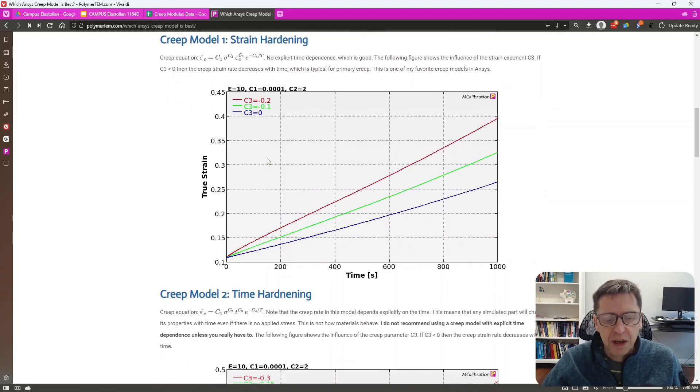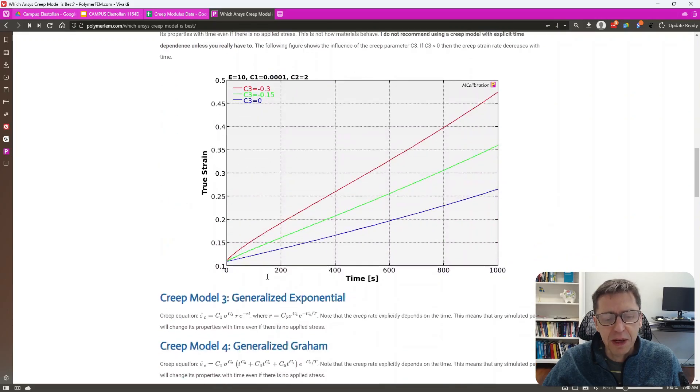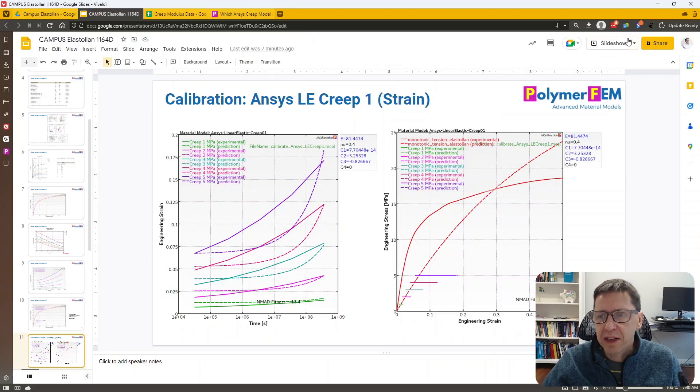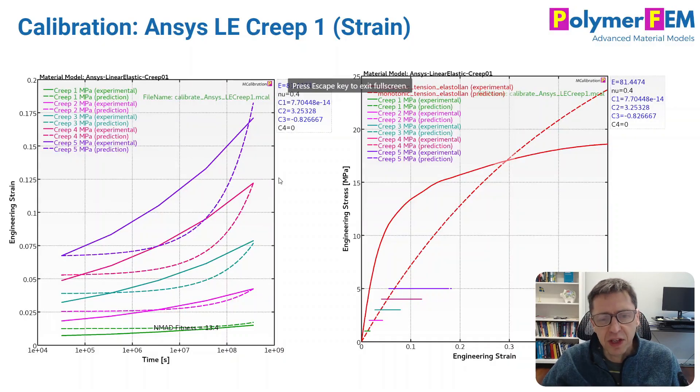Creep strain-based model, and there's also a time-based model, and then many other models as well. So today here, I have applied this model to this data set. And we can see that when I calibrate it to it, even though it's mainly creep data and a monotonic test, it doesn't look very good.